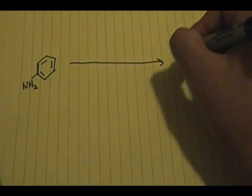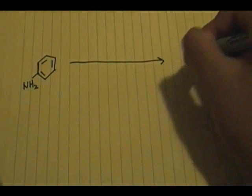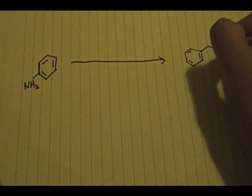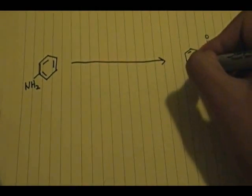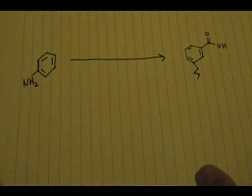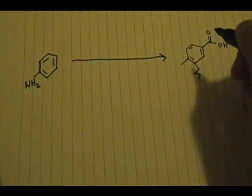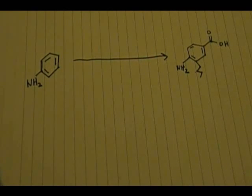The next example I'll go through step by step. The starting material is an aromatic ring with an NH2 group. We want to form a product with a carboxylic acid in one position, a butyl group (four carbons) in another position, and maintain the NH2 group. This is a pretty long synthesis problem — actually seven steps — so let's get right into it.